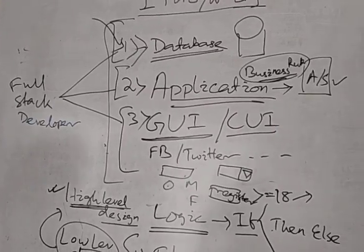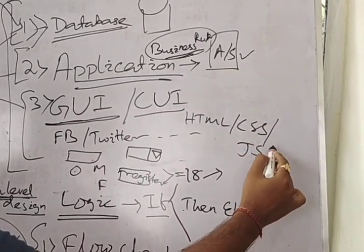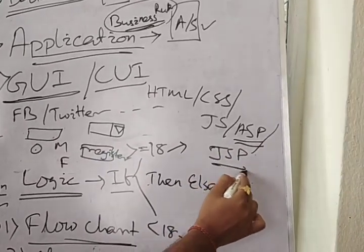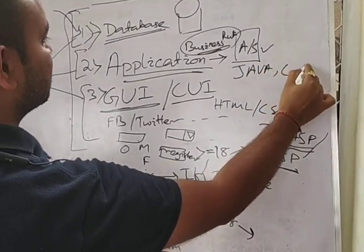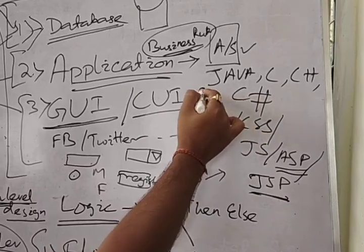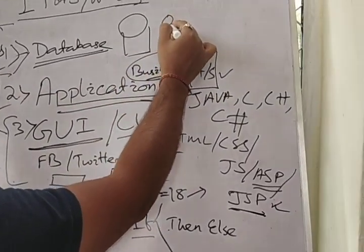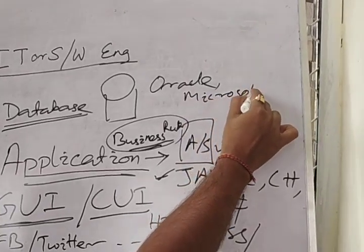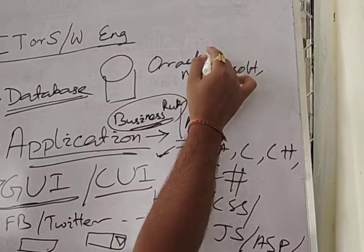In UI layer, you would have heard of HTML, CSS, JavaScript, then ASP.NET from Microsoft, JSP from Sun Microsystem—it's a scripting language. For application programming, Java comes here, C, C++, C# which is a Microsoft product. Java was initially Sun Microsystem's product, now it's Oracle's product.